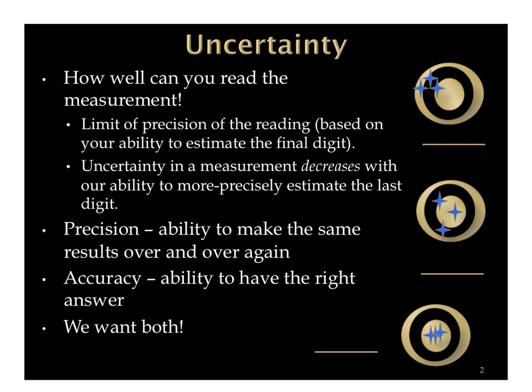Uncertainty is how well you can read the measurement. Sometimes this uncertainty is because of skill — maybe of the person trying to use the ruler, measuring tape, or whatever instrument. Or sometimes it might be due to a limit of the precision of the device you're using.